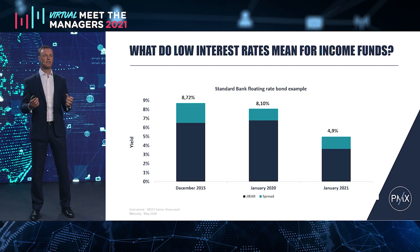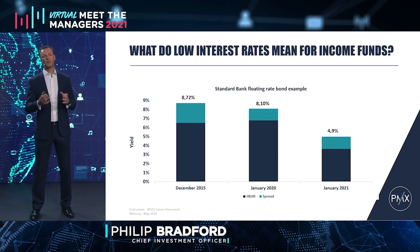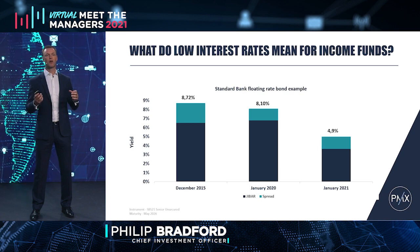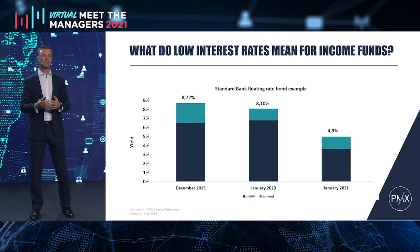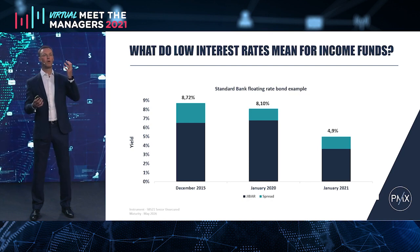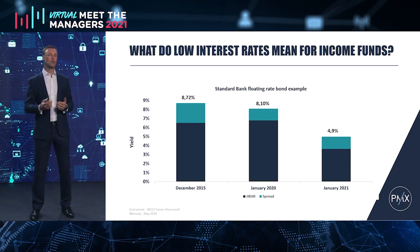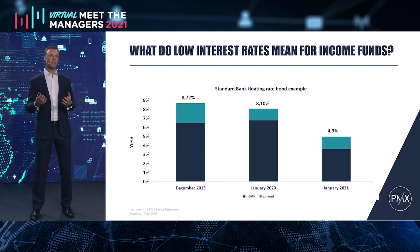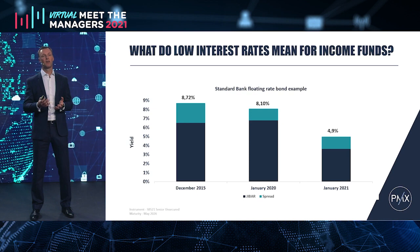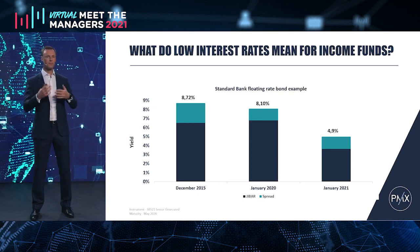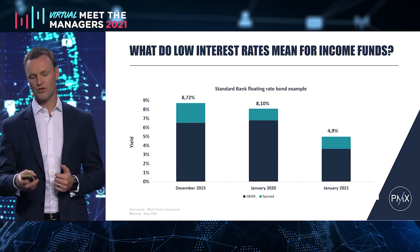Here's a longer-dated floating-rate Standard Bank bond — just over five and a half years, maturing in May 2026. If you go back to December 2015, you were getting just over 8.7% return from this bond. It's a variable-rate investment, so as interest rates go up, you make more; as they come down, you make less. January last year you were getting 8.1%, and now, because interest rates have been cut, you're getting 3.2% less than you were a year ago. All the funds and asset managers holding these instruments in their income funds — even this longer-dated instrument is only going to be getting you closer to 5% return.